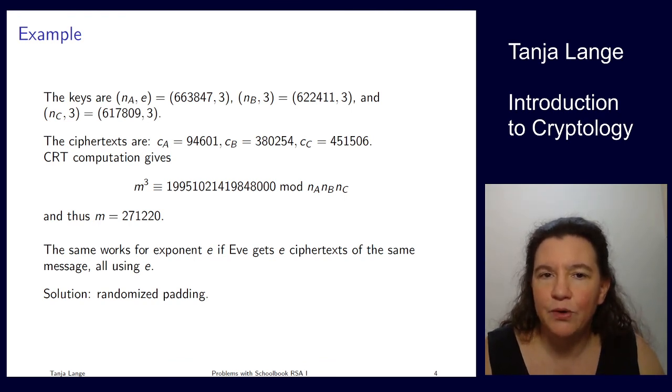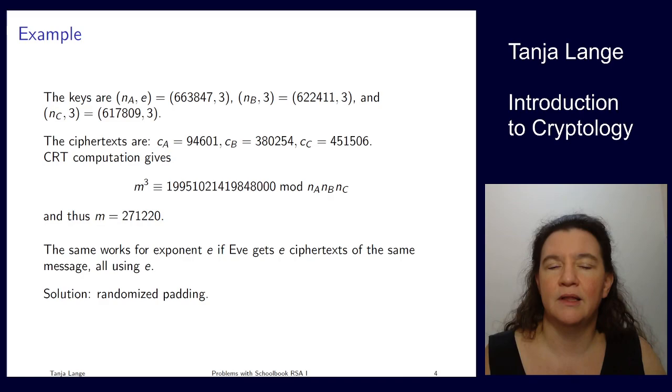And so, yes, we can work around this, but we are getting more and more conditions on what this padding has to satisfy, so schoolbook RSA would be just plainly using the message as it comes in, and we now have argued for we do need also some padding in order to deal with short messages, and we need to deal with randomizing the padding, so that we can avoid this attack.